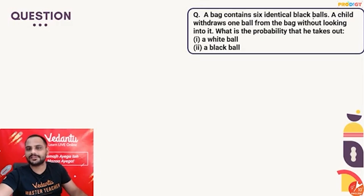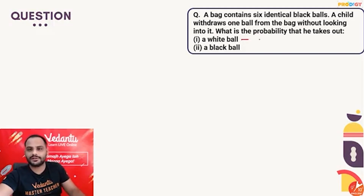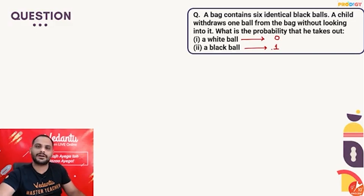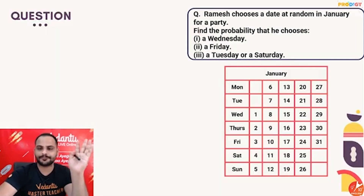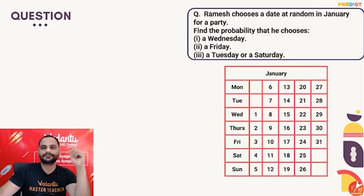A bag contains 6 identical black balls. A child withdraws one ball without looking into the bag. What is the probability that he takes out a white ball? Since there are only black balls, probability = 0. What is the probability that he takes out a black ball? All 6 outcomes are favorable, so probability = 1.